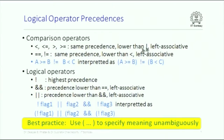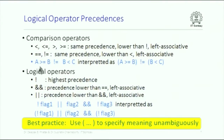== and != have the same precedence, lower than less-than, and are left-associative. For example, a > b != b < c is interpreted as (a > b) != (b < c) — the != symbol has lower precedence than comparison operators, so comparisons are done first and then the two logical values are combined by !=. The logical operators NOT, AND, OR all have precedences lower than comparison operators; within them, NOT has the highest, AND has lower precedence than NOT (left-associative), and OR has the lowest (left-associative).